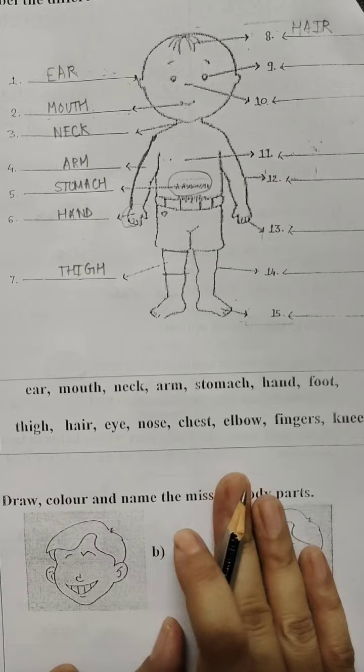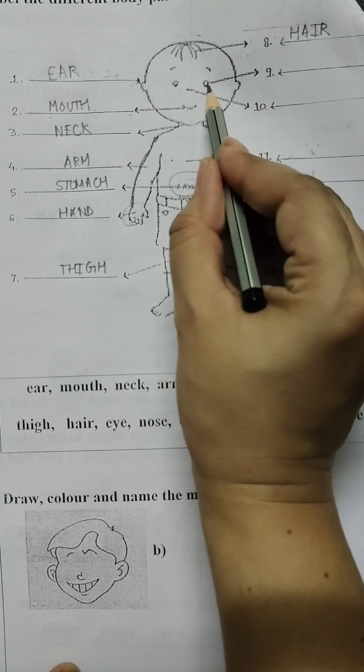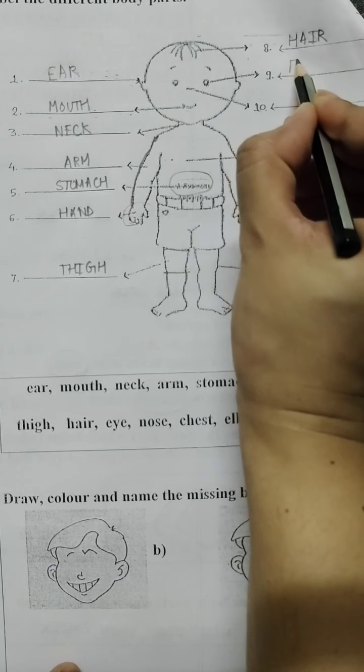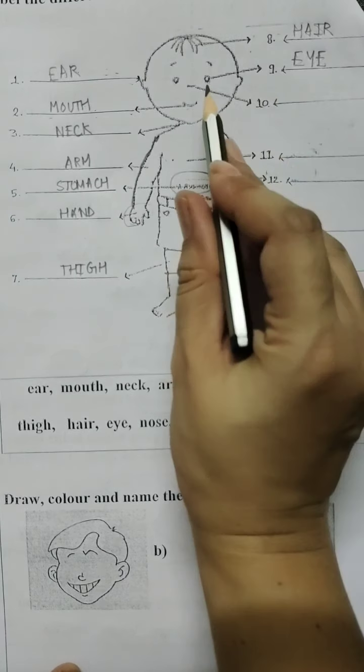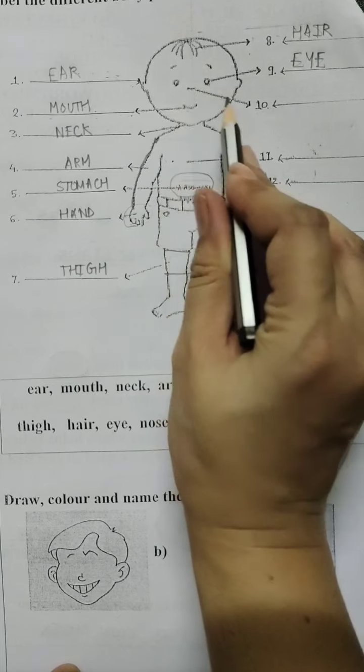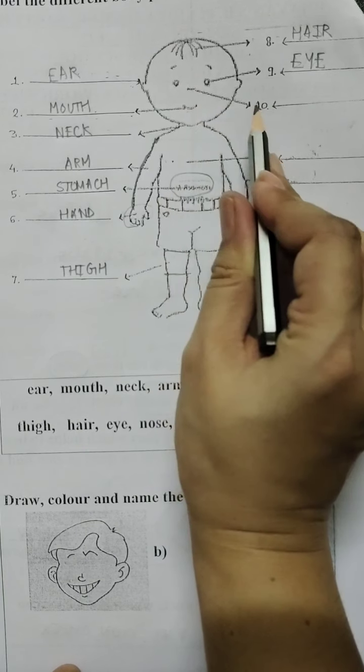Now the next one here. These are the eyes. The eyes help us to see. Now the next one is the nose. The nose helps us to smell or breathe.